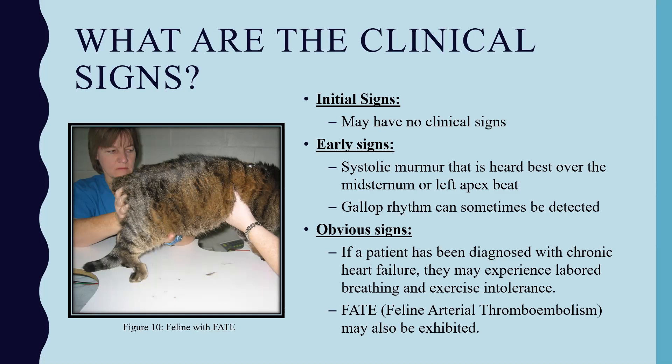Some obvious signs you may see include labored breathing, present in animals previously diagnosed with chronic heart failure, and exercise intolerance. In some cases, a syndrome called FATE may occur — feline arterial thromboembolism — which is a blood clot that originates in the heart and blocks blood flow to one or more limbs. This syndrome causes sudden onset of paralysis in one or several legs, and the affected extremities will be very cold and very pale.